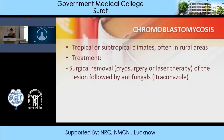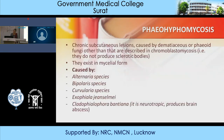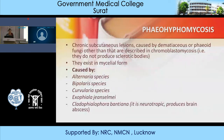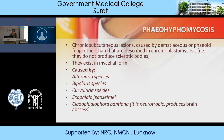Another presentation is pheohyphomycosis — chronic subcutaneous lesions caused by dematiaceous or melanized fungi, but unlike chromoblastomycosis they do not produce sclerotic bodies and generally exist in mycelial form. They are caused by Alternaria species, Bipolaris, Curvularia, Exophiala jeanselmei, Cladophialophora bantiana. Treatment is itraconazole and surgical excision of the lesion.